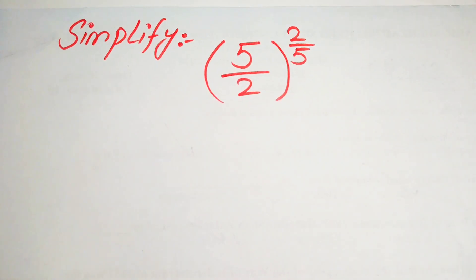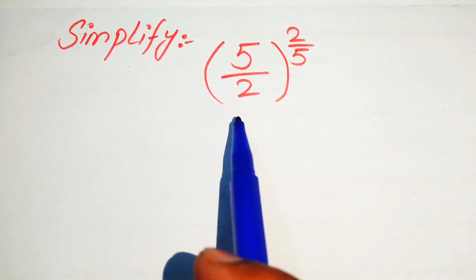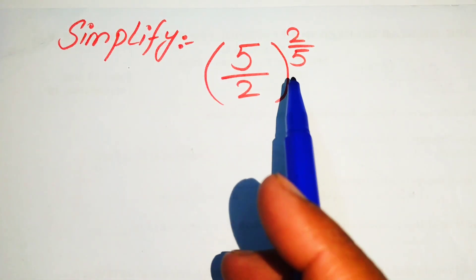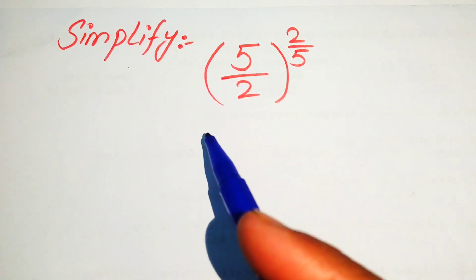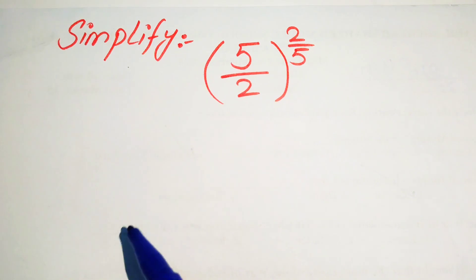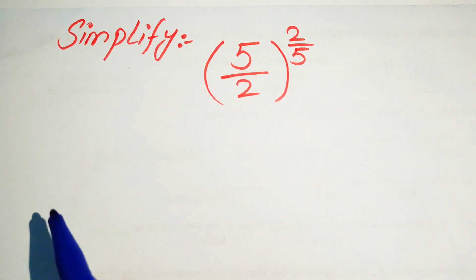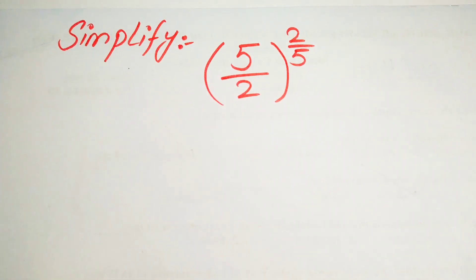Hello everyone. How to simplify this nice algebraic expression: we have (5/2) and its whole power is 2/5. We will write this into simplified form by using the radical as well as the exponential laws.